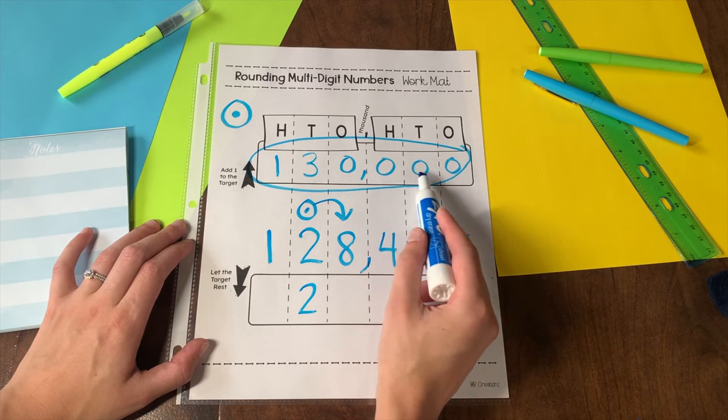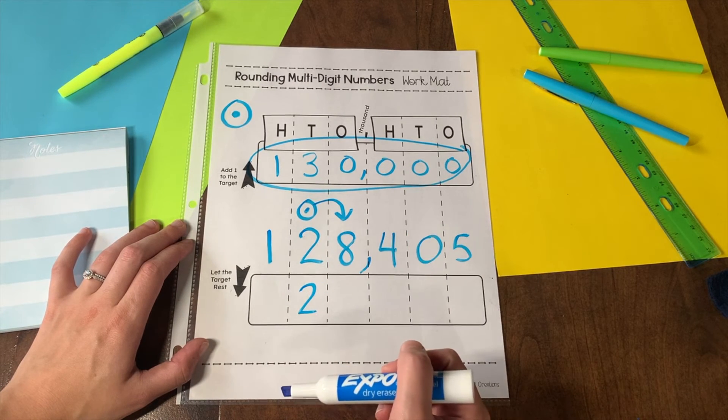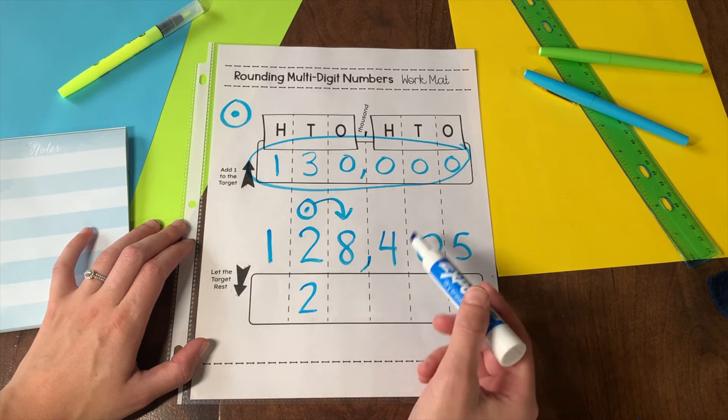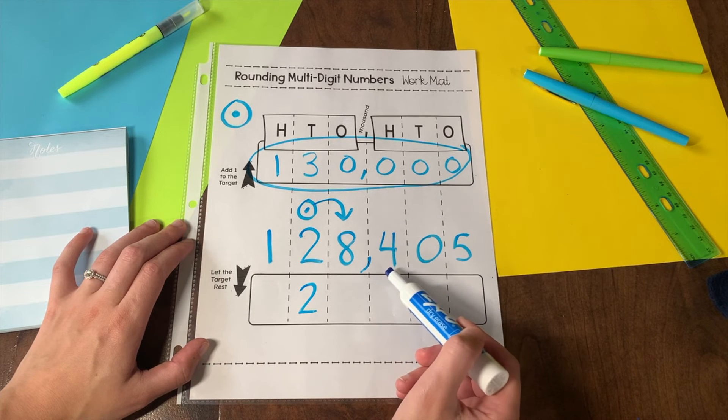Notice all of the zeros in this rounded number. That will make it easier to use for adding, subtracting, even multiplying. This is an estimate of my original number.